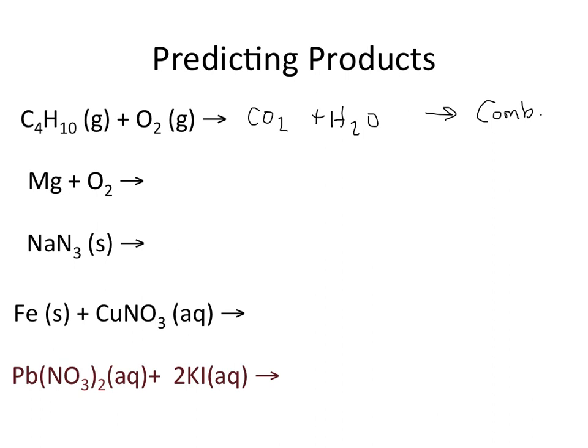Moving to the next example, notice I have elemental forms of my reactants. The simplest form present suggests I'm most likely undergoing a synthesis reaction, because I'm starting with the basic, simplest form of each reactant. I'm going to get MgO as my product. How do I know it's MgO? When forming ionic compounds, I use the cross-down method — magnesium forms a +2, oxygen forms a 2−. Cross those down, you get Mg2O2, reduce that down, and you subsequently get MgO as your product. So synthesis is what we have here.